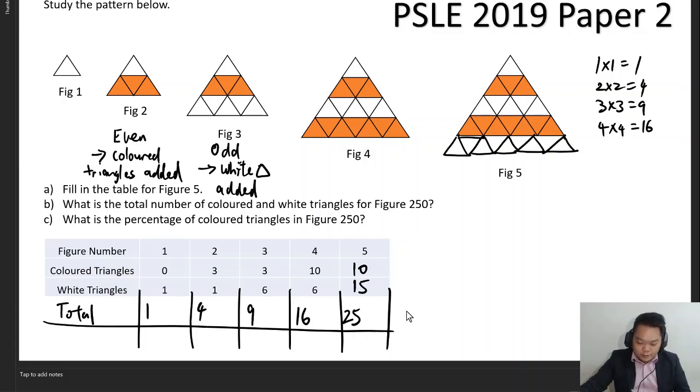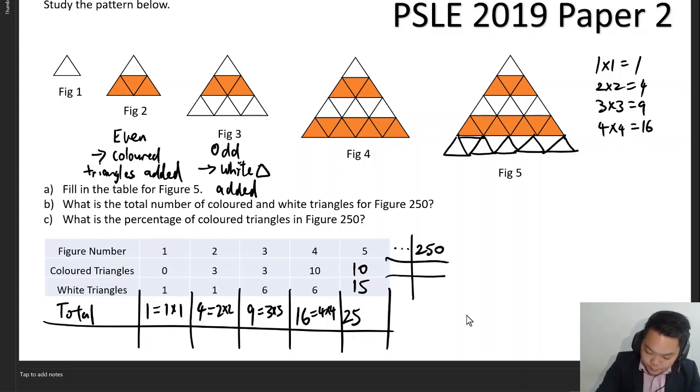All these would give you square numbers: this is one times one, this is two times two, this is three times three, four times four, and so on. So even if you are to blow the figure number up to 250, this total would simply be 250 times 250, because the number that is multiplied by itself has to be the same as that of the figure number. Let's evaluate that: 250 times 250 will simply give us 62,500.